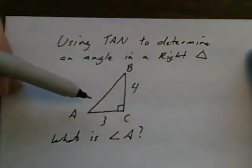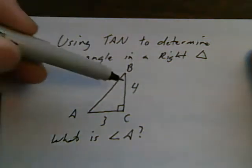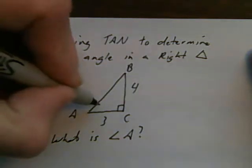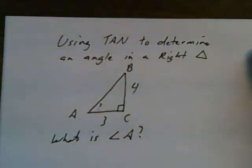Here I've got a right-angle triangle, ABC. One side is 4, one side is 3. I would like to find out how big angle A is.